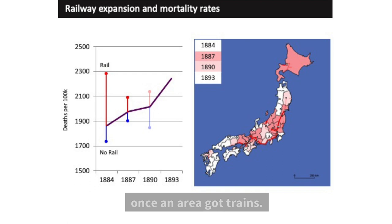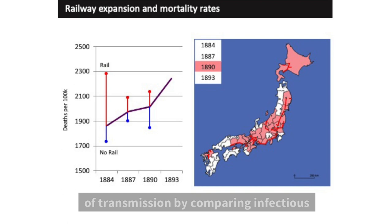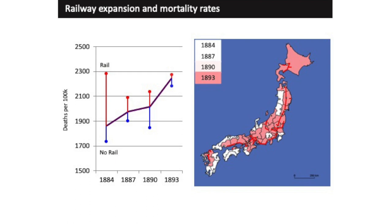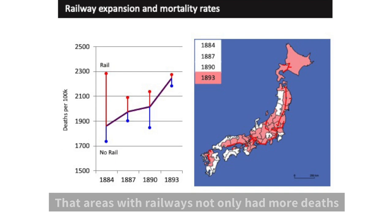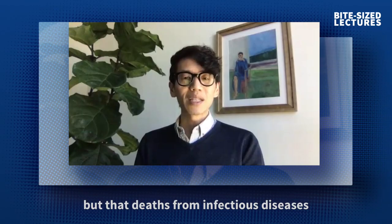Basically, I was testing whether trains were the vector of transmission by comparing infectious versus non-infectious mortality rates. I found that it was indeed the case — that areas with railways not only had more deaths compared to before trains were introduced, but that deaths from infectious diseases were much higher than others.